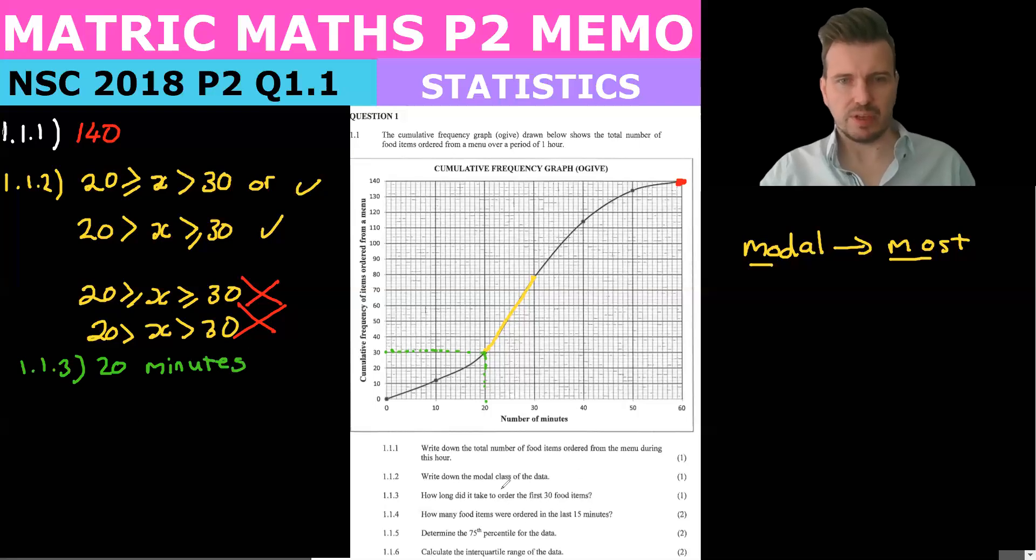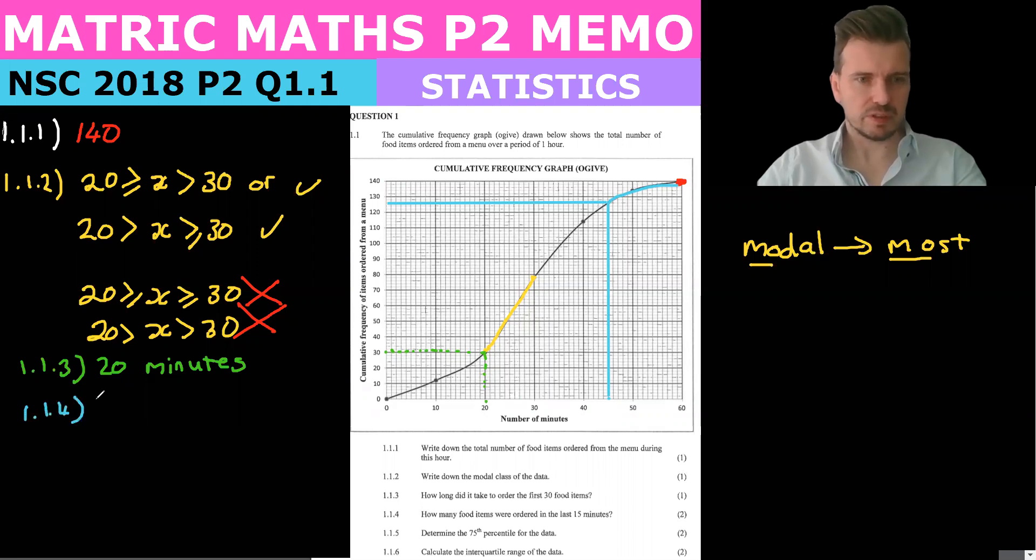How many food items were ordered in the last 15 minutes? Okay, so we look at the last 15 minutes, so that would be after 45 minutes. We see that it's about 120. So from the last 15 is going to be this along here. So 1.1.4 is going to be 140 minutes minus the 125, so we're going to get 15 minutes.